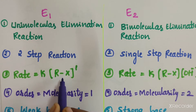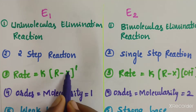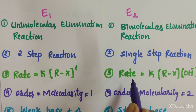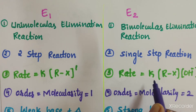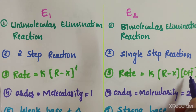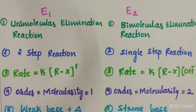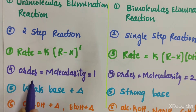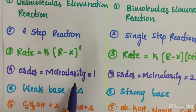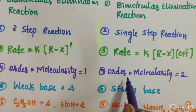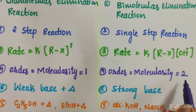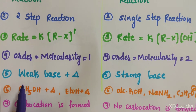For E1, the rate is equal to k times the concentration of the alkyl halide to the power of one. The rate depends only on the alkyl halide. But for E2, the rate depends on both the alkyl halide as well as the base. The order and molecularity for E1 is one, while for E2 it is two.